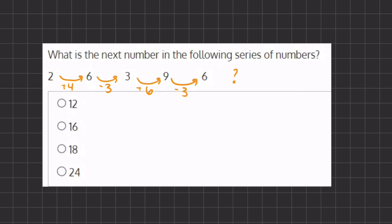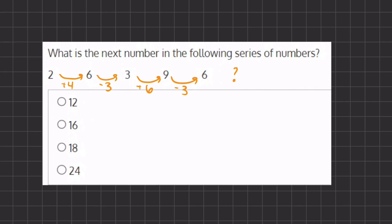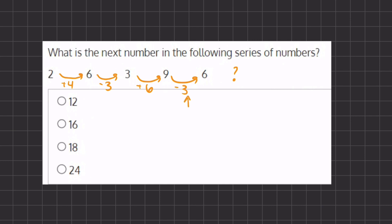Alright, so if we try to catch on to a pattern, we are switching off between addition and subtraction. And our addition keeps growing by 2. And because our last transition was subtraction, our next transition will be addition. And instead of plus 6, we are going to do plus 8.